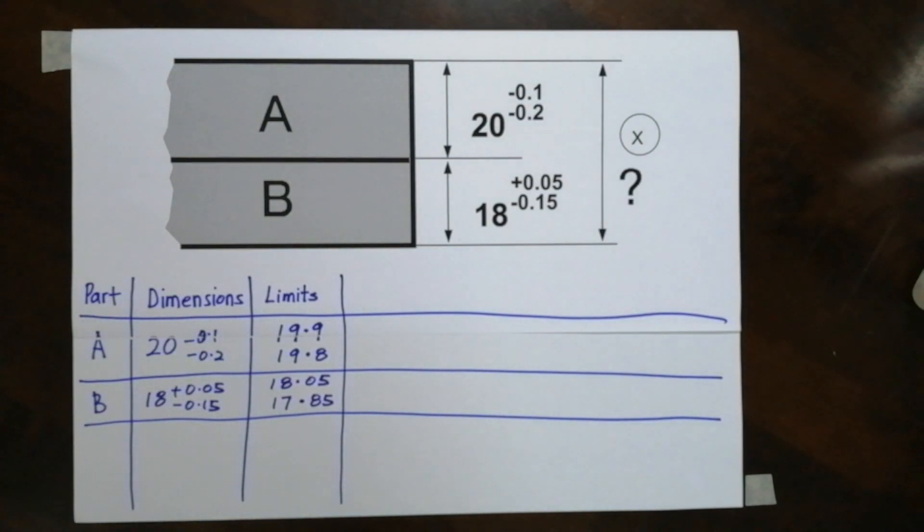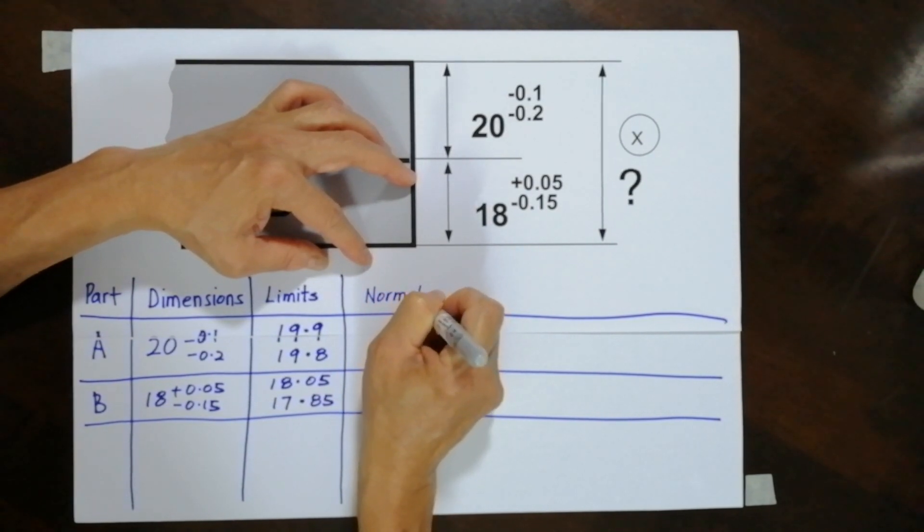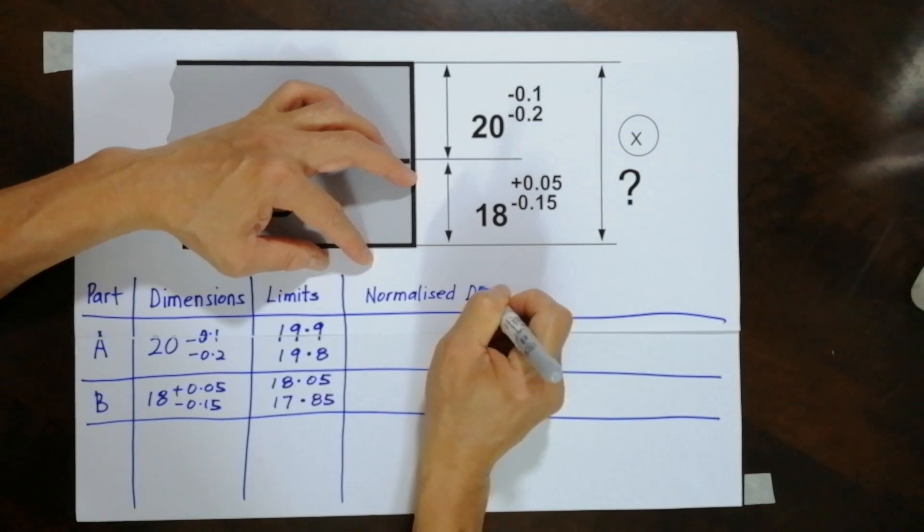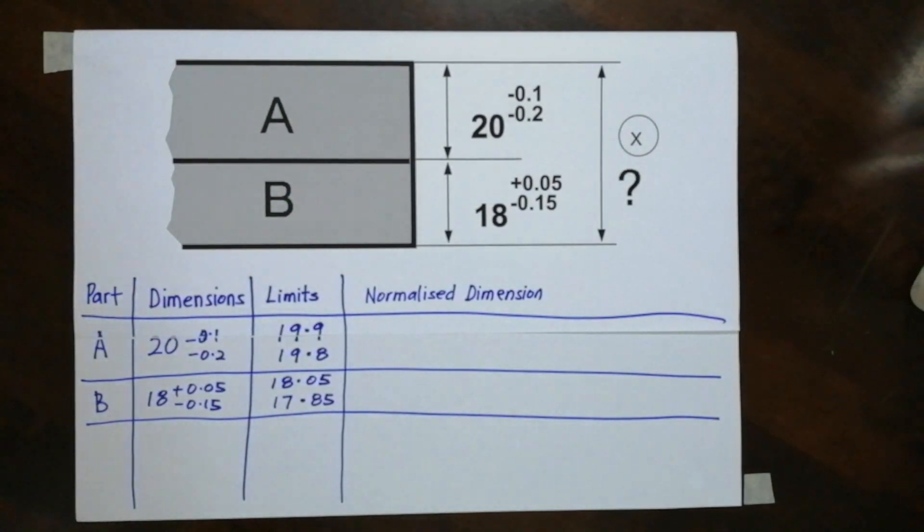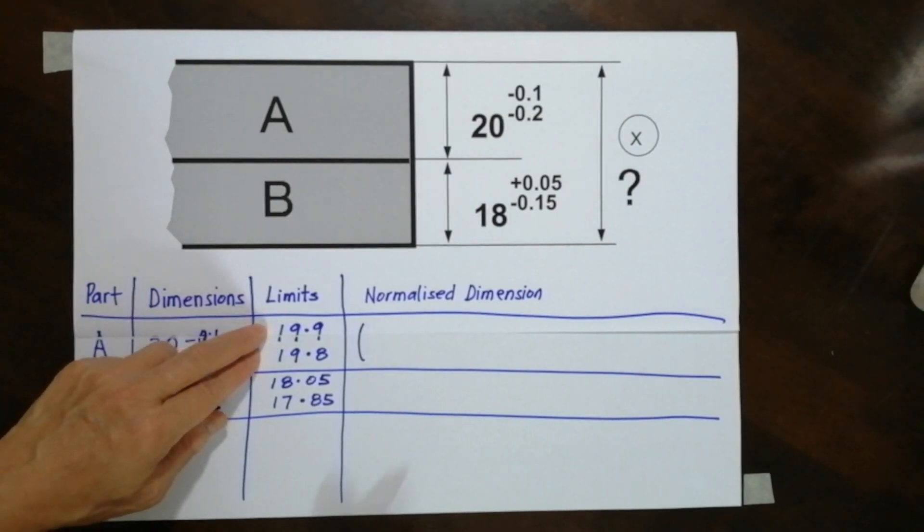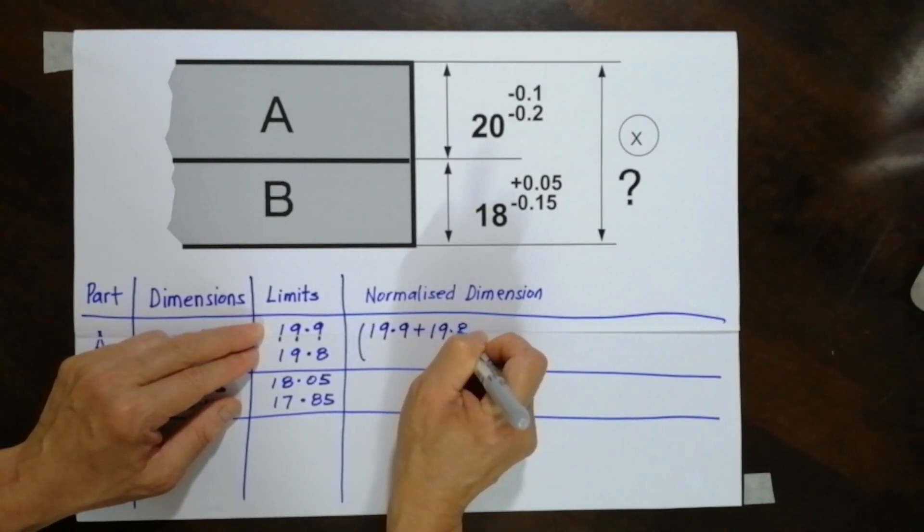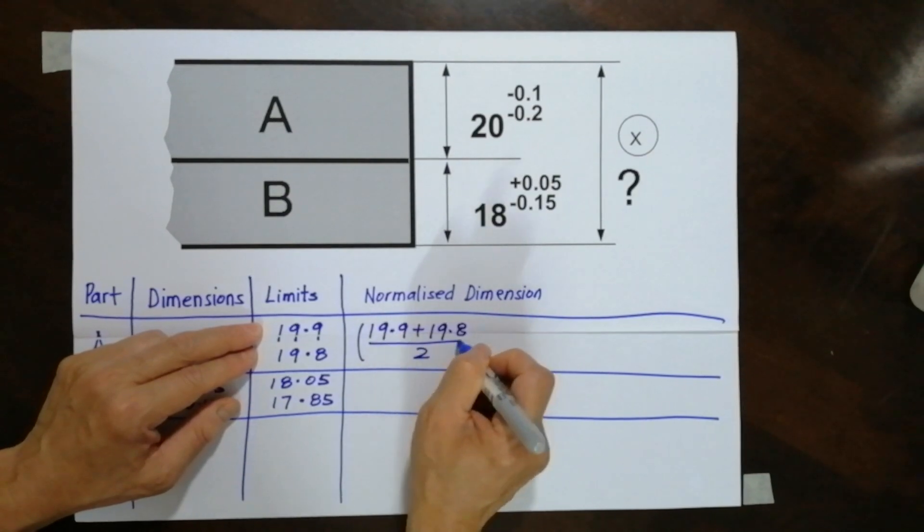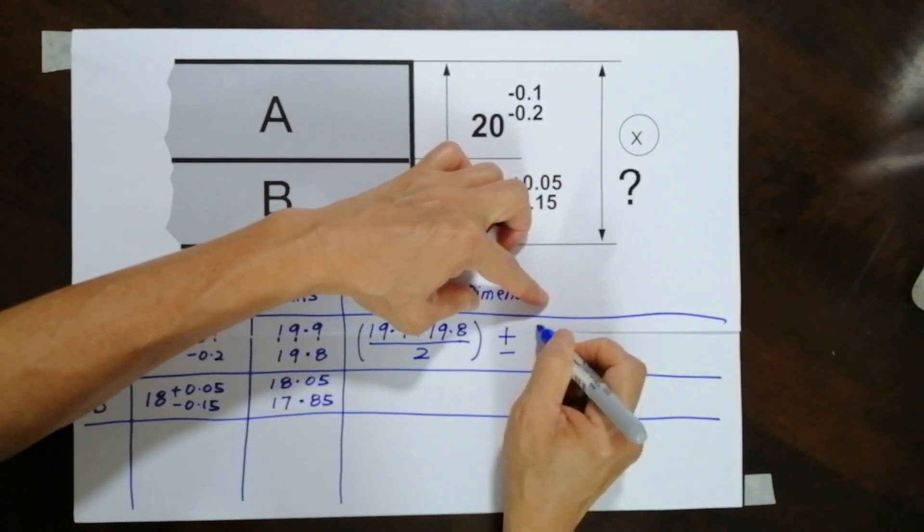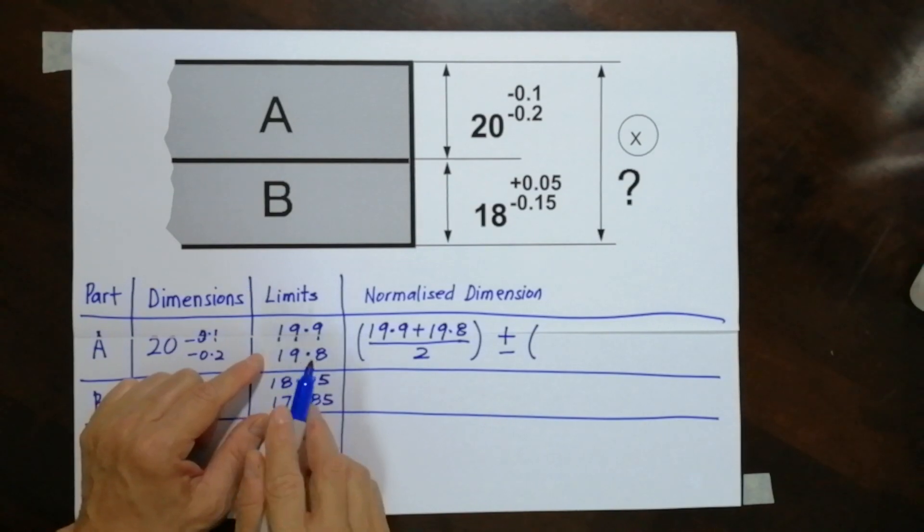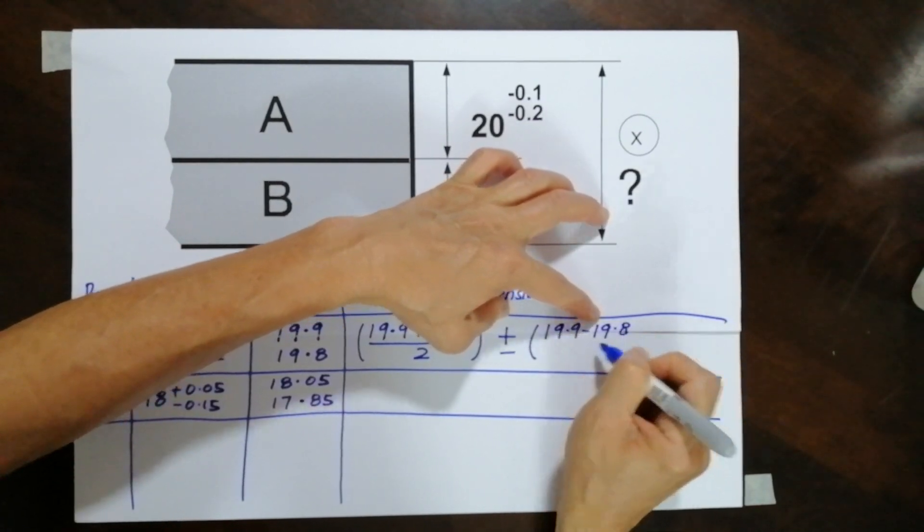Now, the next one is going to be more difficult. It's called the normalized dimension. So how do we normalize the dimension? The approach like that: We take the average of this, which is 19.9 plus 19.8, divide by 2. For the nominal, and for the tolerance of plus and minus, we'll take the upper limit, subtract the lower limit. So it's 19.9 subtract 19.8, divide by 2.